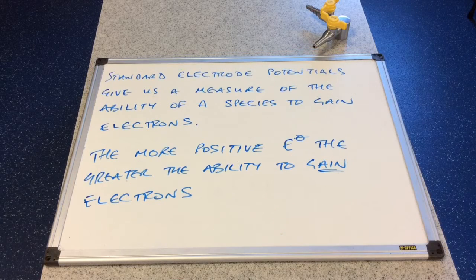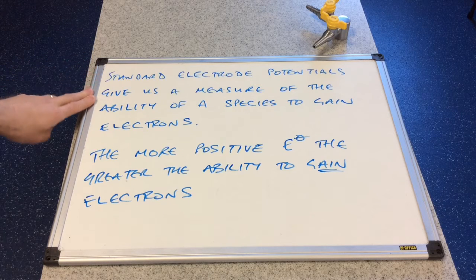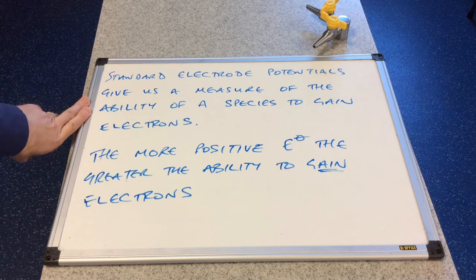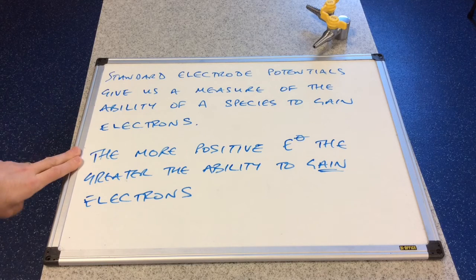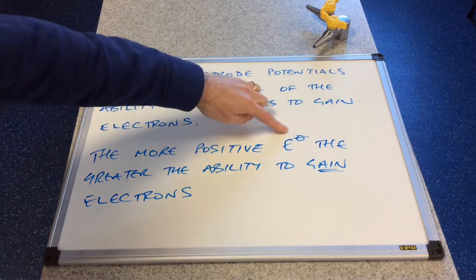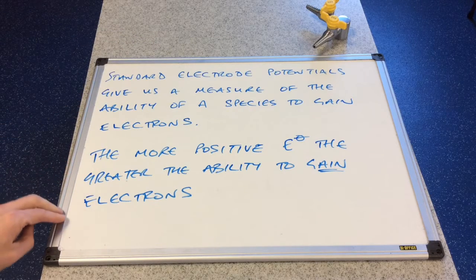So we'll just do a quick summary at this point. Standard electrode potentials give us a measure of the ability of a species to gain electrons. The more positive the standard electrode potential, the greater the ability to gain the electrons.